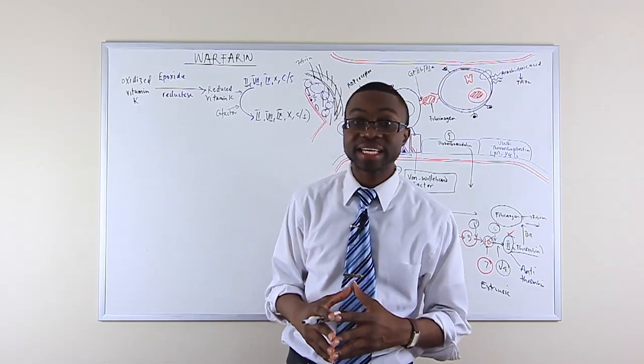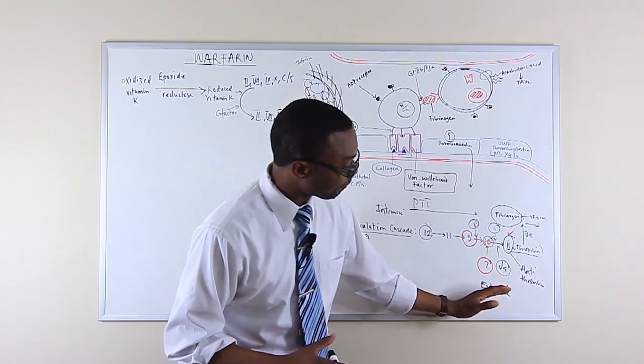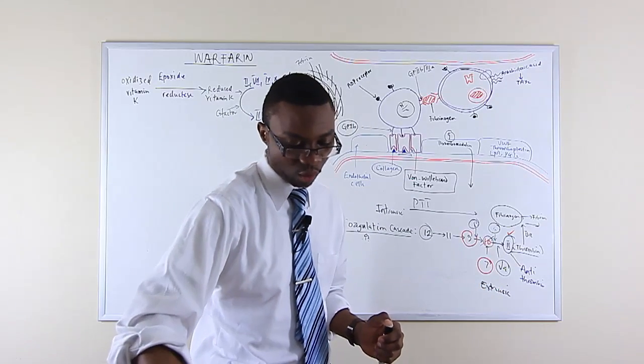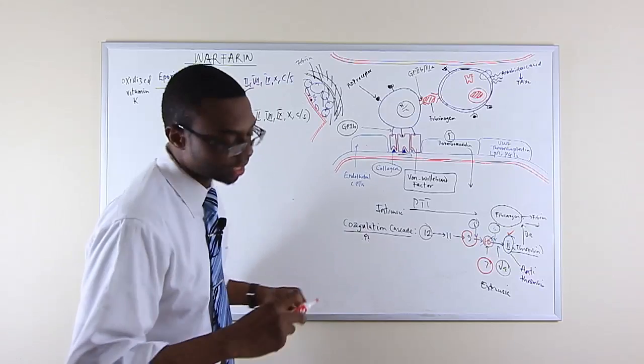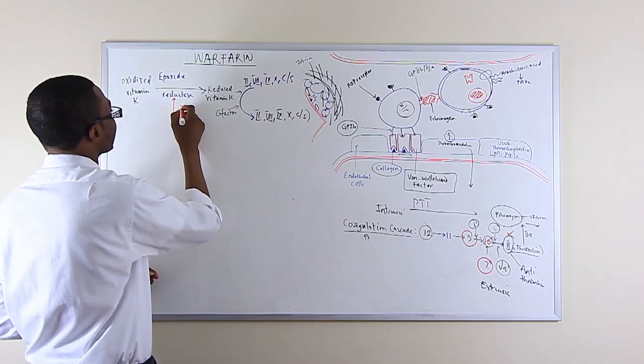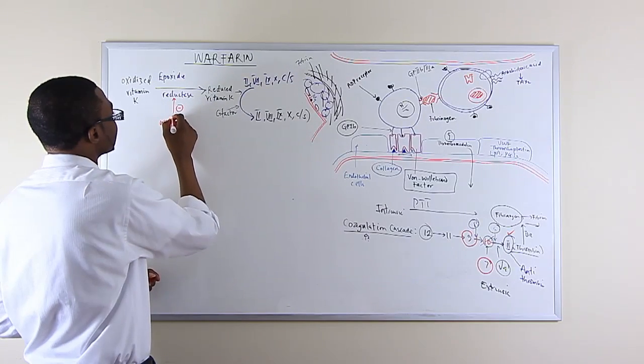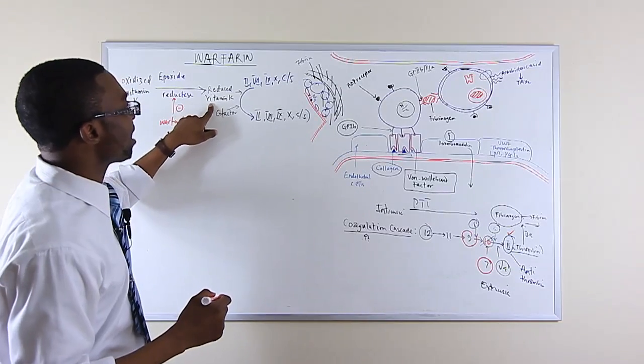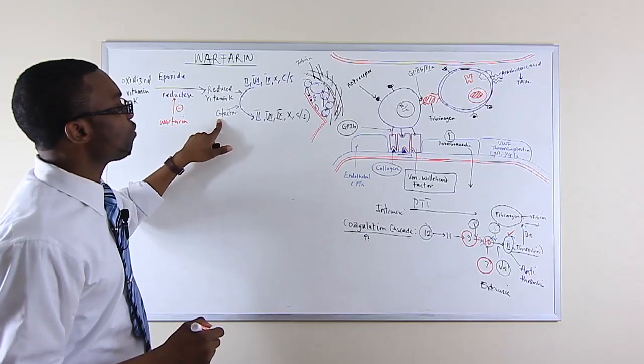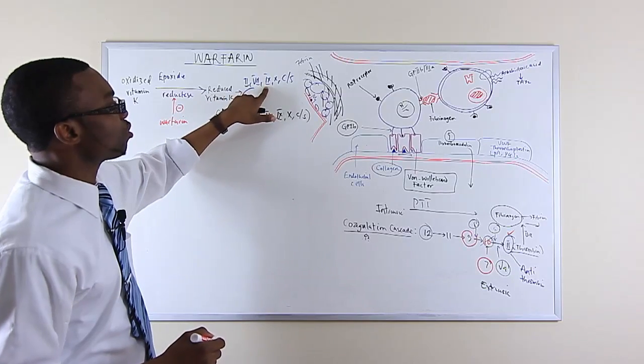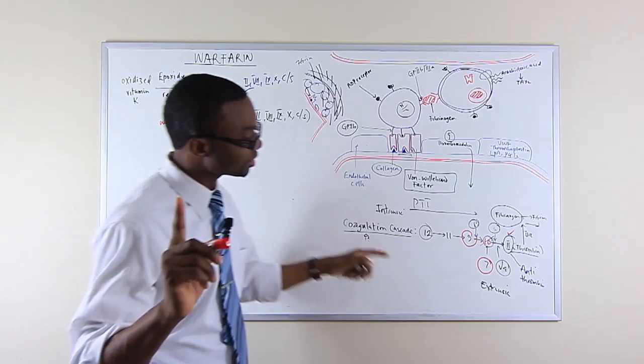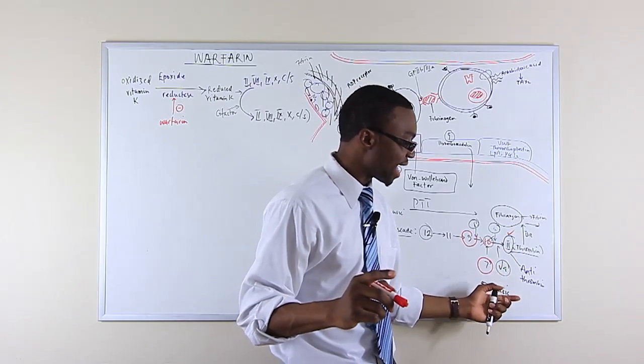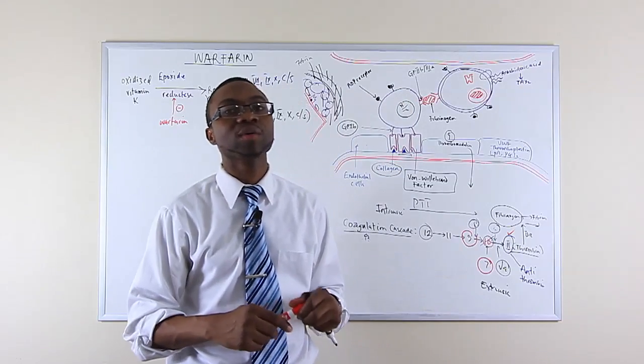Now where warfarin kicks in is warfarin is going to inhibit epoxide reductase. Warfarin inhibits epoxide reductase. And when warfarin inhibits that, we don't have a reduced form of vitamin K to act as a cofactor to convert these immature cofactors into mature cofactors, which means if we don't have factor 7, factor 9, factor 10 and factor 2, the extrinsic pathway is not going to function.